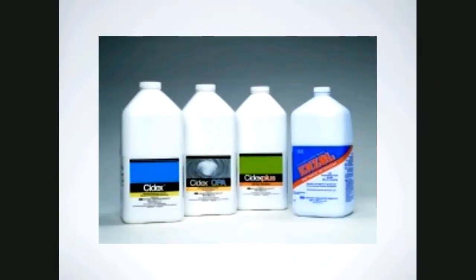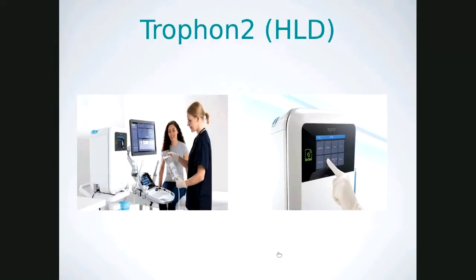The Trophon 2 — HLD stands for high-level disinfectant — uses a strong hydrogen peroxide solution. You place the transducer inside for a specified number of minutes; the process is fully electronic and prompts you on how to proceed. When you go through Week One on the PowerPoints, click on the Trophon 2 HLD link and it will bring you right to the website. It's a good idea to get the certification before you go out on your clinicals.